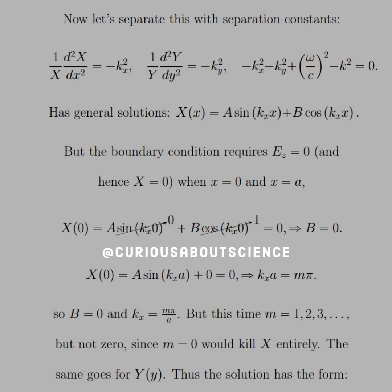This has the general solution X equals A sine(k_x x) plus B cosine(k_x x). The boundary conditions require that E_z equals zero, and hence X equals zero when x equals zero and x equals a. So parallel, if we're in the z direction, parallel at the plane x equals zero and x equals a. Same thing with y equals zero and y equals b.